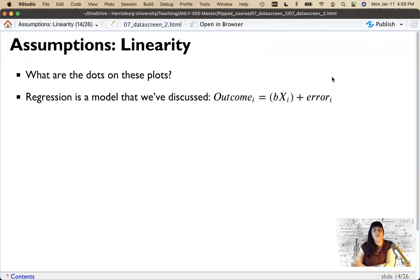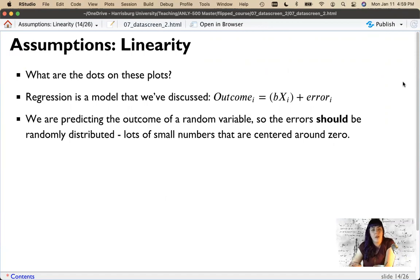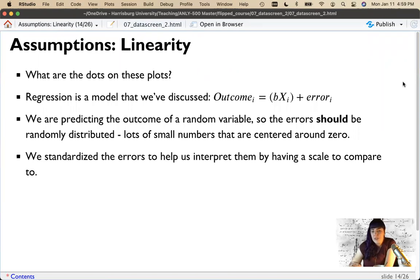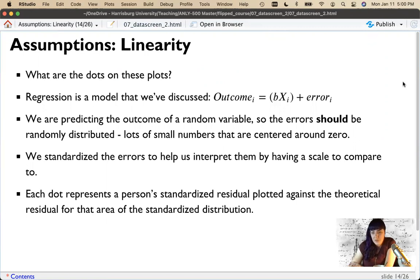Now the dots on these plots, just to kind of sum all of that conceptual idea up at once is a representation of model fit. So regression is a model we've discussed. So each outcome, each Y dependent variable, which in our case is a random variable is predicted by each independent variable X here, plus some form of error. And we're predicting a random variable. So the errors here should be randomly distributed. Lots of small numbers that are centered around zero. And we standardized them just to help us interpret what's going on because then the scale for all of the assumptions, linearity, normality, homogeneity, and homoscedasticity, all of them involve looking between two and two.